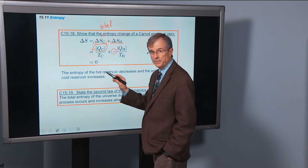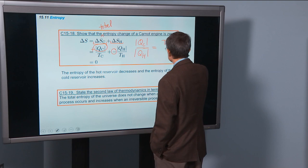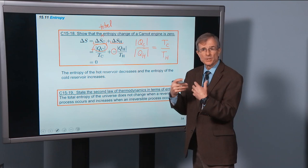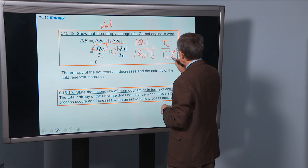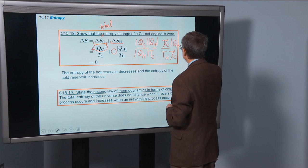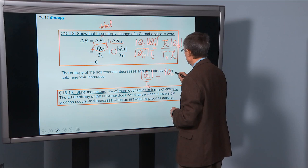But lo and behold, this is zero. And let me show you why. Qc over Qh, as we've mentioned many times for a Carnot cycle, is proportional to the temperature. It's independent of the material used in the engine. Well, I can rewrite this. If I divide both sides by Tc, then these Tc's will cancel. And if I multiply both sides by Qh, then these Qh's will cancel. And I end up with Qc over Tc equals Qh over Th.